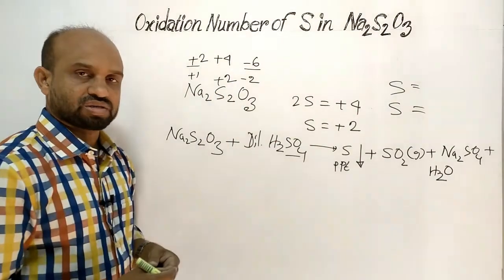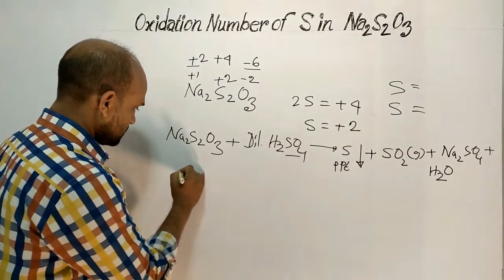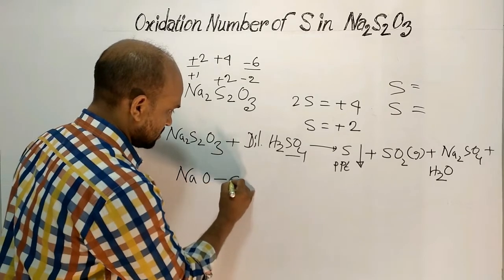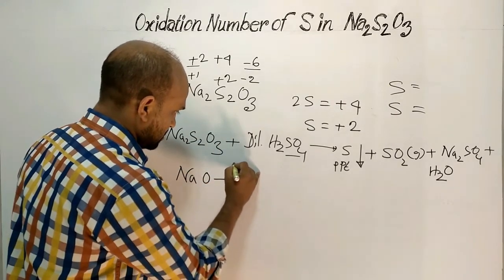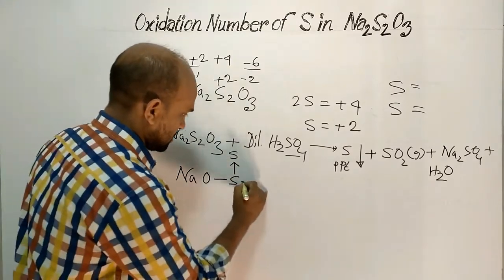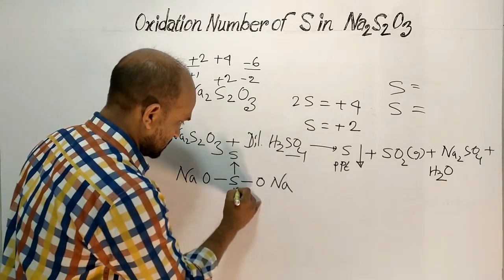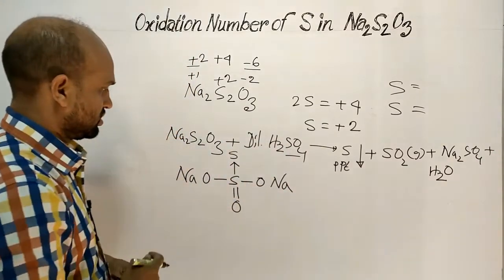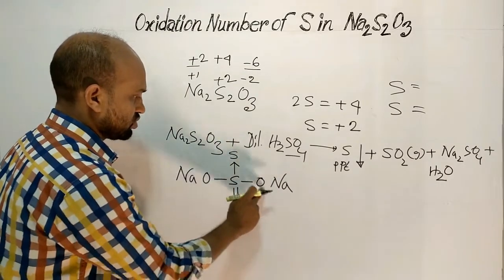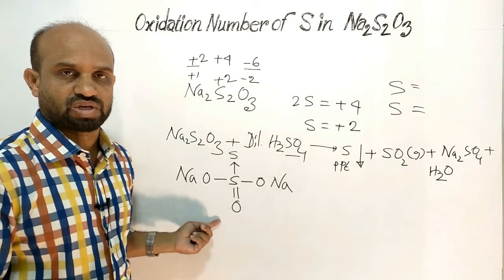Let's see the structural formula of sodium thiosulfate. The structure is: sodium, oxygen, sulfur — this is one sulfur — and this is another sulfur, with oxygen here, sodium here, and oxygen here. This gives Na2S2O3. This is the structural formula of sodium thiosulfate.